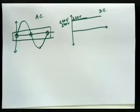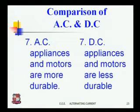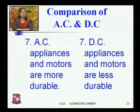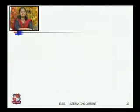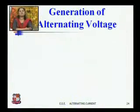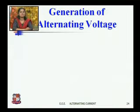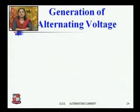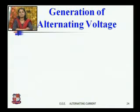So AC appliances and motors are more durable, and DC appliances and motors are less durable. These are the comparisons between AC and DC. Now we will discuss the generation of alternating voltage. As discussed earlier, to generate alternating voltage you require a source which is capable of reversing the direction.